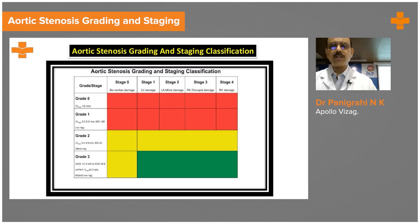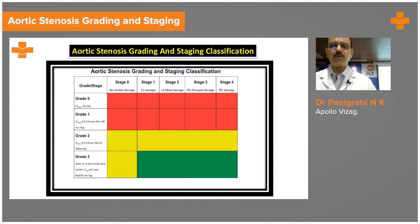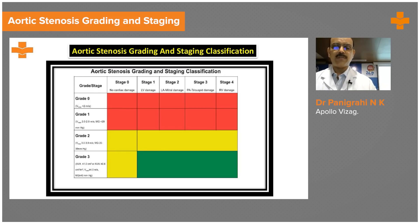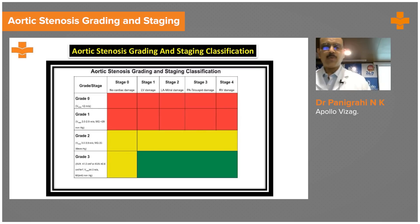We also know that aortic stenosis has been recently graded and classified according to this slide — stages zero through four — according to the European guideline classification, based on LV damage, mitral valve damage, pulmonary artery pressures, or RV damage. A velocity more than four meters per second or a gradient across the LVOT more than 64 mmHg qualifies as severe aortic stenosis.